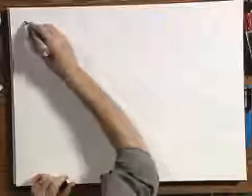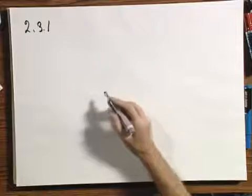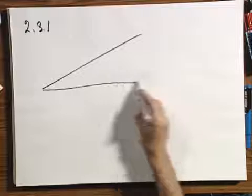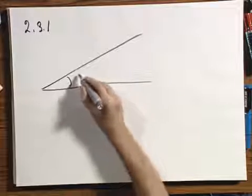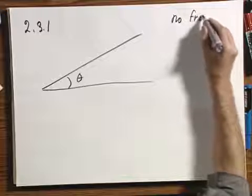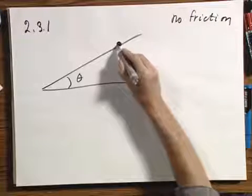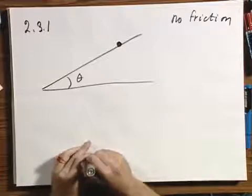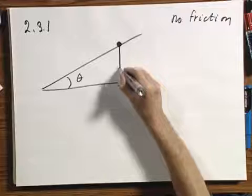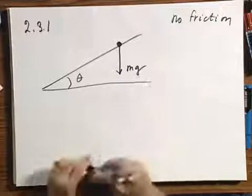Now we have problem 2-3-1. I don't think it's going to give you too much trouble. There's an incline, there is no friction, and there is an angle theta. There is an object, and the object is going to slide down. The object has mass m, so there is the gravitational force mg.